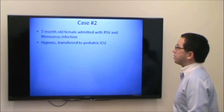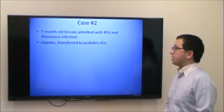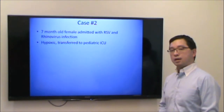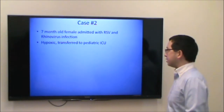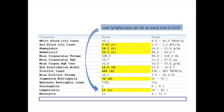Case two: a seven-month-old female admitted with RSV and rhinovirus infection. She is hypoxic with an oxygen saturation of 80% on room air and is transferred to the pediatric ICU. On the CBC with differential, calculating the absolute lymphocyte count by multiplying the white blood cell count by the lymphocyte percentage gives an absolute lymphocyte count of about 1,000, which is very low — it should be around 4,000 to 5,000 at this age.